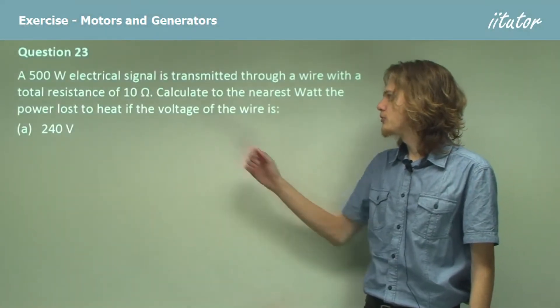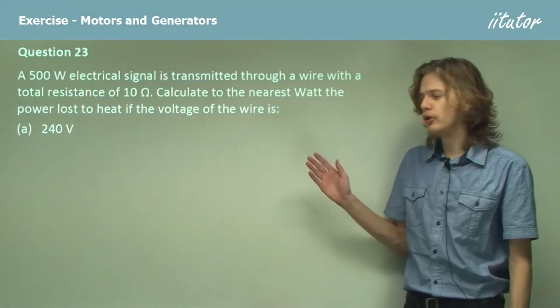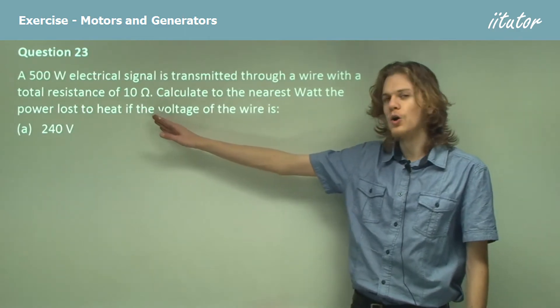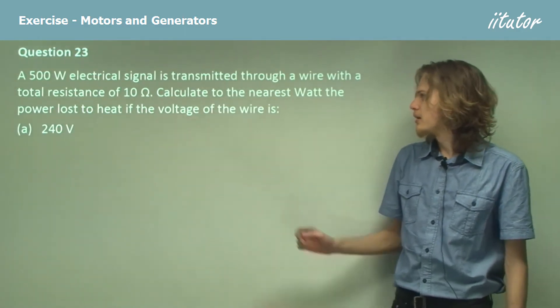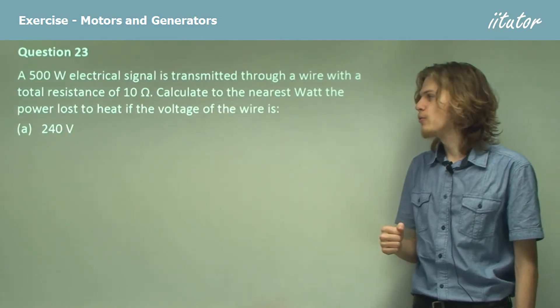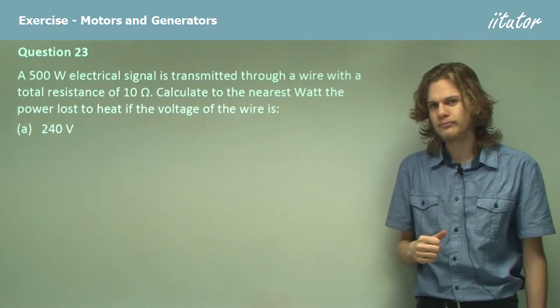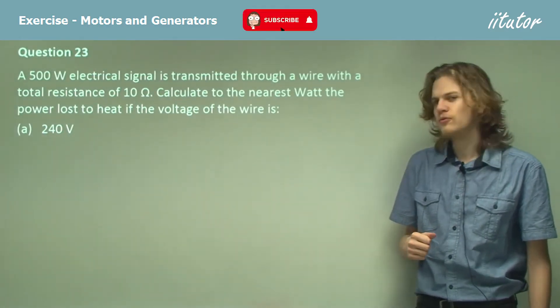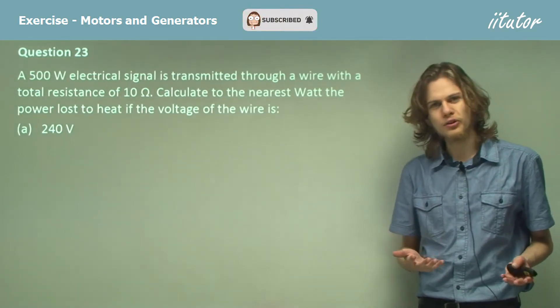A 500 watt electrical signal is transmitted through a wire with a total resistance of 10 ohms. Calculate to the nearest watt the power loss to heat if the voltage of the wire is 240 volts, which is the mains voltage.